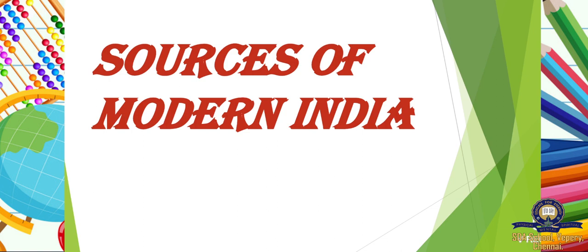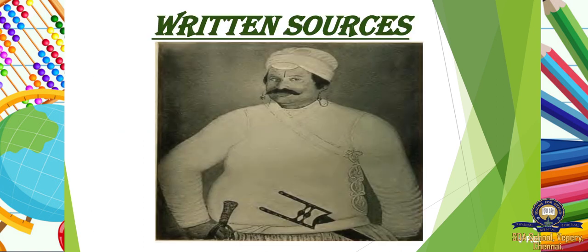Now let's move on to the sources of modern India. The sources for the history of modern India help us to know the political, socio-economic, and cultural development in the country. The Portuguese, the Dutch, the French, the Danes, and the English recorded their official transactions in India on state papers. We can write history with the help of sources like written sources and material sources. After the advent of the printing press, numerous books were published in different languages, and people began to acquire knowledge easily in fields like art, architecture, history, and science.